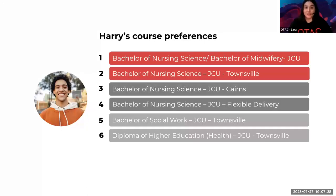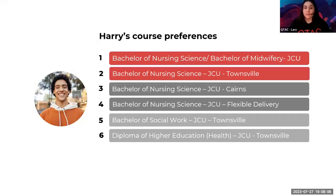Harry really wants to get into the nursing field. So preferences one and two are the courses he really wants. Three and four are his backup courses. Five and six are pathway courses — if Harry can't get straight into any of the courses he really wants, these are a great option to upgrade into his dream course. It's always important to have something like a fifth preference that is less competitive than the Bachelor of Nursing and Midwifery. Studying there for a year full-time can heavily increase Harry's application rank and make him very competitive. Make sure you have something there that you know you'll well and truly meet the entry requirements for.